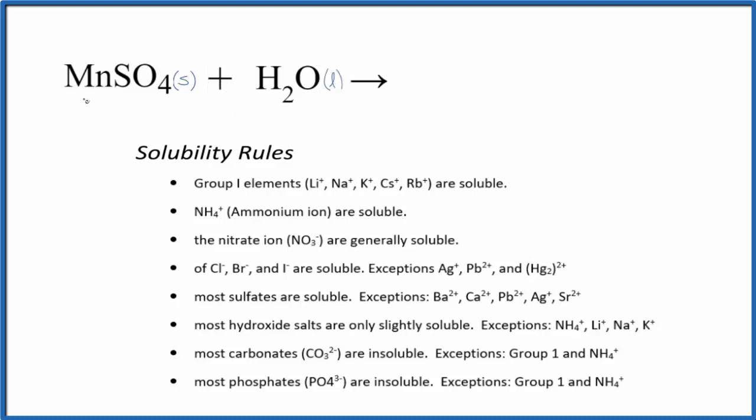Since manganese is a metal and this sulfate ion is made up of non-metals, this is an ionic compound. We expect that it might be soluble, but we should look at the solubility rules.